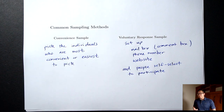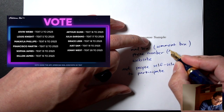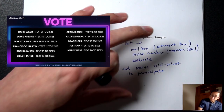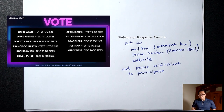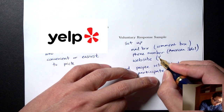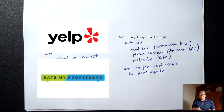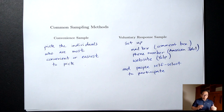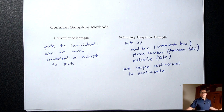A phone number example I'm thinking of is American Idol — a singing competition where at the end of the show they give you a number to call in and vote for your favorite act. A website example would be any review website like Yelp or Rate My Professors. The problem with voluntary response samples is that studies have shown the people who choose to participate are often people who are either super happy or super pissed off. You rarely get people in the middle.